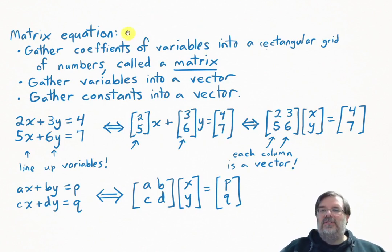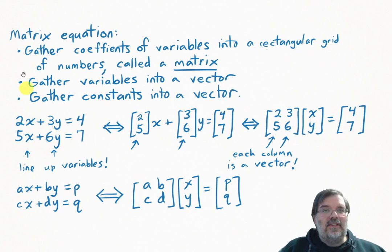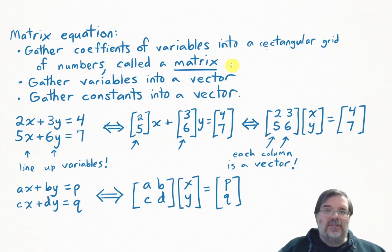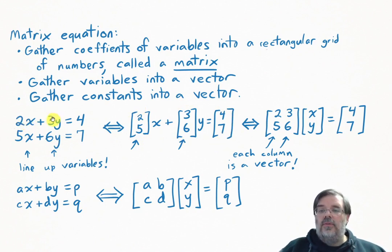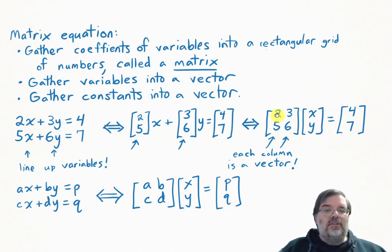Now let's learn about matrix equations. The idea is that you're gathering different parts of the equation into different locations. We're going to gather the coefficients of the variables into a rectangular grid of numbers, which is called a matrix — a matrix is just a grid of numbers. We'll gather all the variables into a vector, and all the constants into a vector. Here's a system of equations. We always want to start by lining up the variables: line up your x's, line up your y's. The coefficients 2, 3, 5, and 6 get gathered into a grid of numbers, enclosed with square brackets. That's our first example of a matrix.